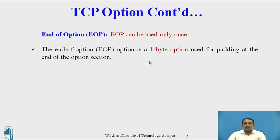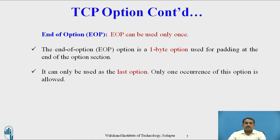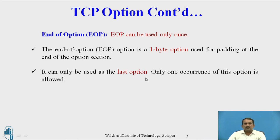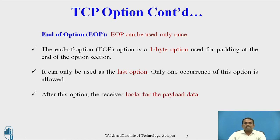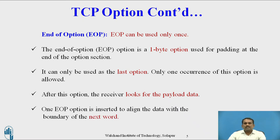The end of option is a one-byte option used for padding at the end of the option section. Both the TCP packet and the UDP datagram formats can contain the option field, allowing extra data to be added. It can only be used as the last option, with only one occurrence allowed. After this option, the receiver looks for the payload data, and one end of option is inserted to align the data with the boundary of the next word.